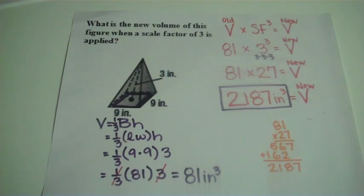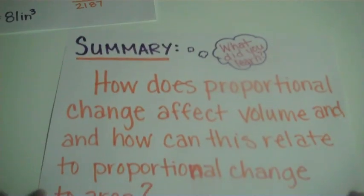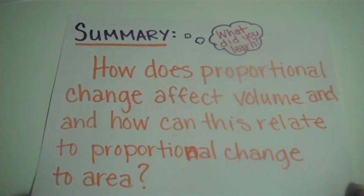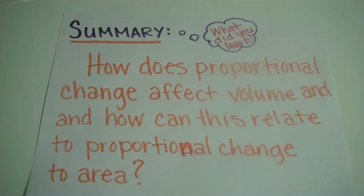Alright guys, remember if anything is a little bit hazy, take responsibility for your learning. Go back, rewatch it, slow it down, pause, do what you need to do to understand the topic. And do not forget to do your summary. We want to know what you learned. In your summary, you should be answering the question, How does proportional change affect volume? And how can this relate to proportional change to area?